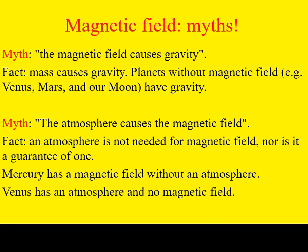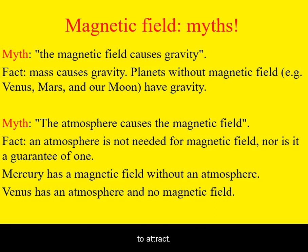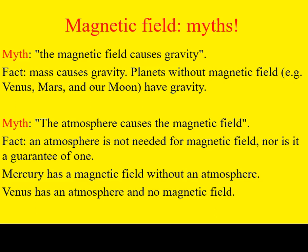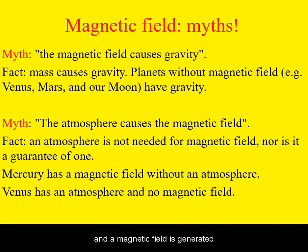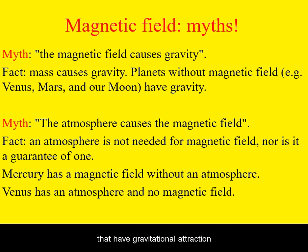The first misconception has to do with the nature of both magnetic fields and gravity to attract. However, they are not related to each other. Gravity is caused by mass, and a magnetic field is generated through the dynamo theory. There are planets that have gravitational attraction without a magnetic field.